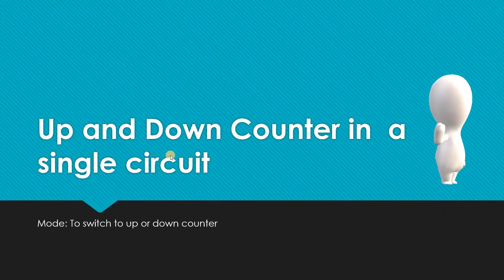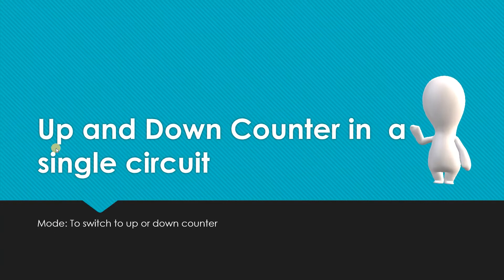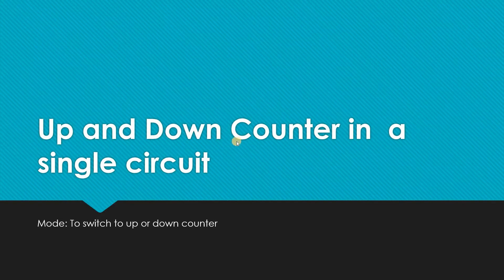Hello guys. In the previous video we saw how to implement an up counter and down counter separately. Now we are going to implement both of them in a single circuit. We will use one line called 'mode' — you can name it whatever you want — by which we can switch between up and down.